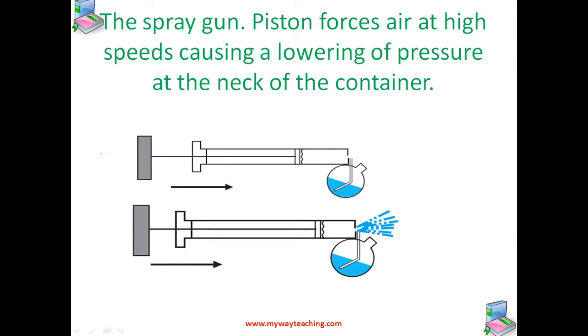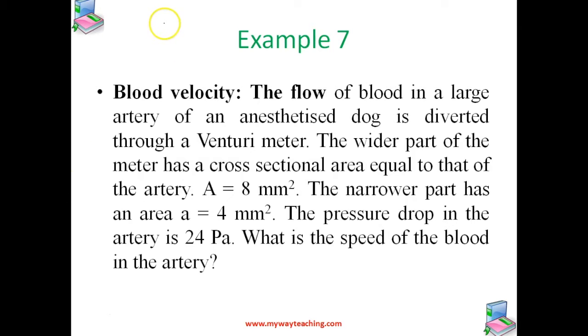Now let us solve a very simple problem on blood velocity. The flow of blood in a large artery of an anesthetized dog is diverted through a Venturi meter. The wider part of the meter has a cross-sectional area equal to that of the artery, A equals 8 mm squared. The narrower part has an area a equals 4 mm squared. The pressure drop in the artery is 24 pascal. What is the speed of the blood in the artery?